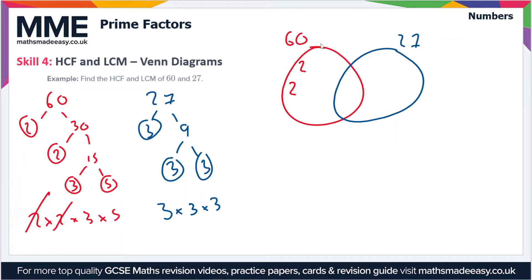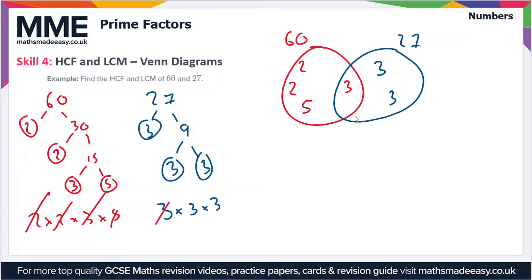Now if we look at the 3 — there's a 3 in the prime factorization of 27, so the 3 goes in the intersection, and we'll cross the 3 off both lists. Then the 5: there are no 5s in the factorization of 27, so we put the 5 in the 60 circle and cross it off. Moving on to 27 — we've already placed one 3 in the intersection, so that's crossed off.